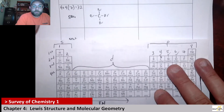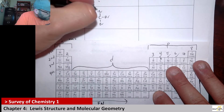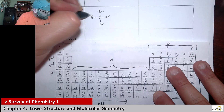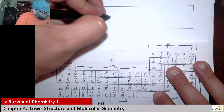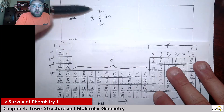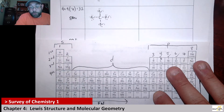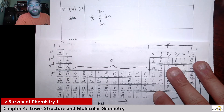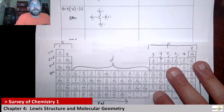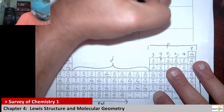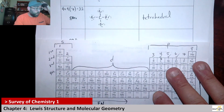I recommend we start by putting lone pairs on the terminal atoms — six lone pair electrons on each bromine, so each bromine now has eight electrons total. Eight plus eight plus eight plus eight is thirty-two — all electrons are placed. Carbon also has an octet and is happy, and every bromine has an octet and is happy. The central atom has four domains and all of them are bonding, so this is a tetrahedral molecular geometry — four bonding domains, no lone pairs, tetrahedral.